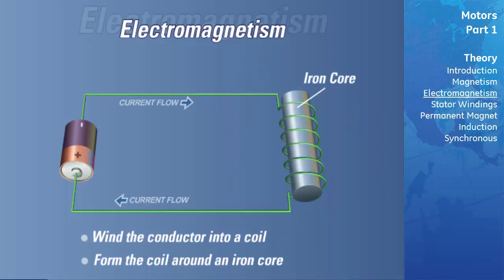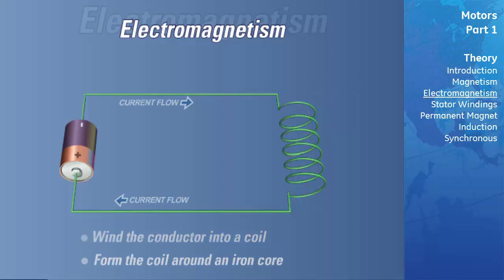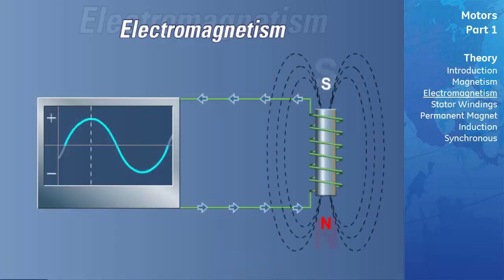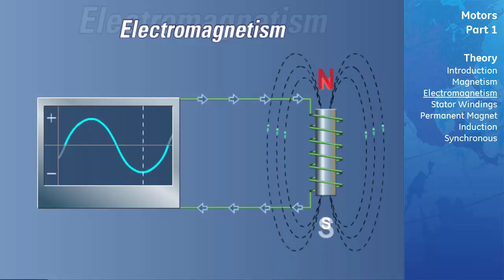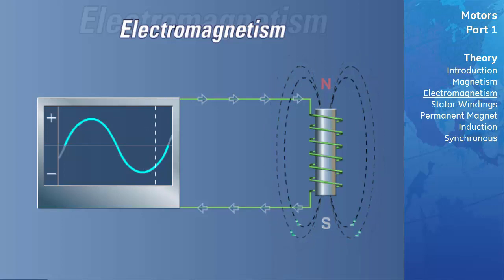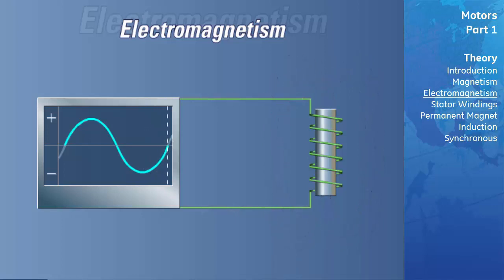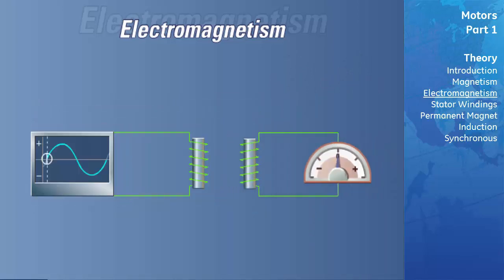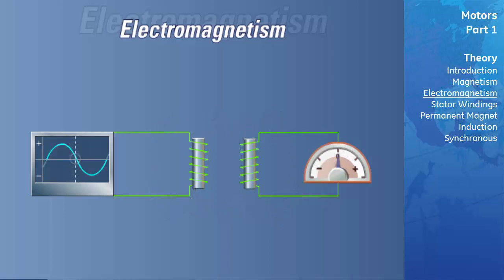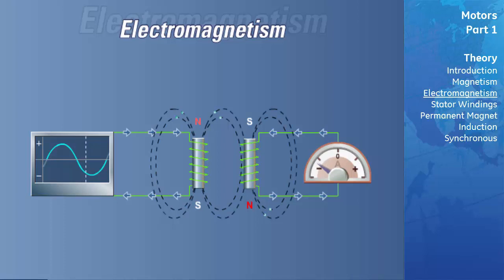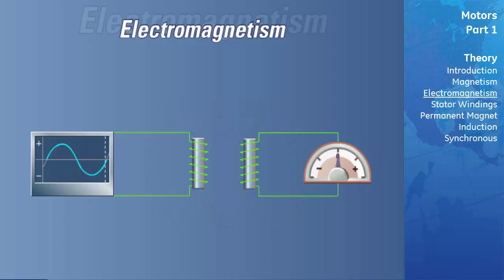Until now, we have been using direct current to study the properties of our electromagnet. If we connect our electromagnet to a suitable source of alternating current, we will see that the polarity of the electromagnet will change at the frequency of the applied current, and the absolute maximum and minimum field strength will coincide with the peak and zero current of the applied excitation voltage, as illustrated. If a second electromagnet is brought into close proximity of our AC excited electromagnet, the cyclic expansion and contraction of the magnetic field will continuously cut the conductor windings of the second electromagnet, inducing a voltage and hence current in the non-excited coil. This induced current will create a secondary magnetic field, as illustrated.